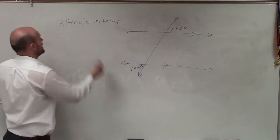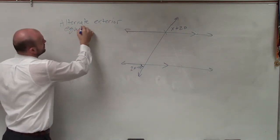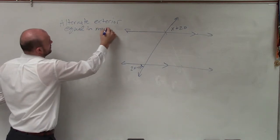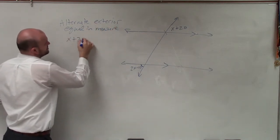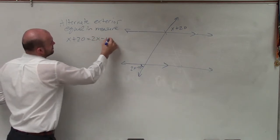And by labeling alternate exterior angles, now I know that they are equal in measure. So therefore, I can just set up an equation. x plus 20 equals 2x minus 10.